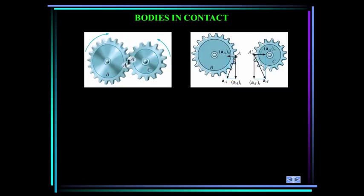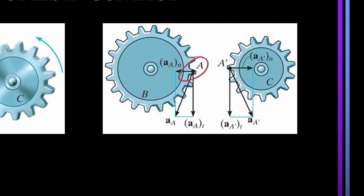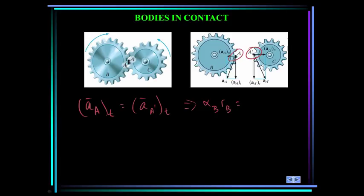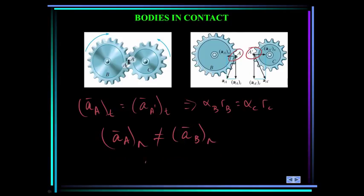Now let's consider bodies in contact like two gears. They contact each other without slipping, so the points in contact move along different paths — point A and point A prime. The tangential component of the acceleration of A equals the tangential component of the acceleration of A prime. This implies that alpha of B times radius of B equals alpha of C times radius of C. Since these gears rotate with different angular velocities and have different radii, the normal accelerations are not the same. In general, the acceleration of A is not equal to the acceleration of A prime.